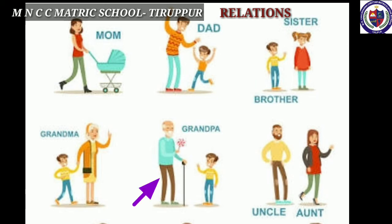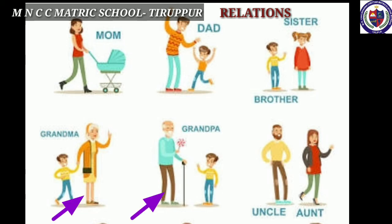Do you have a grandfather? Who is the grandfather? Your father's father and your mother's father are called grandfather. Do you have a grandmother? Who is the grandmother? Your mother's mother and your father's mother are called grandmother. Grandfather and grandmother are called grandparents. You have an uncle. Who is the uncle? Your mother's brother and your father's brother are called uncle.